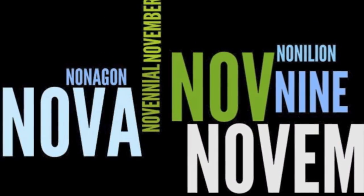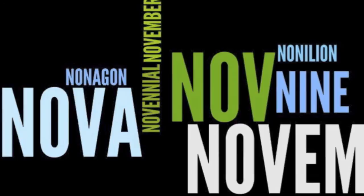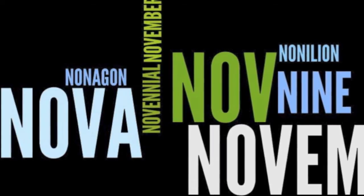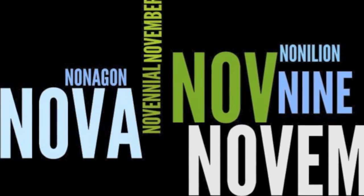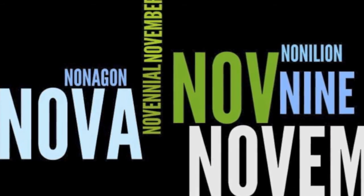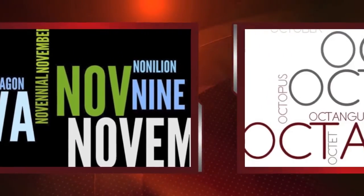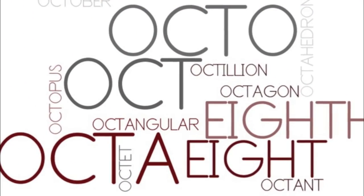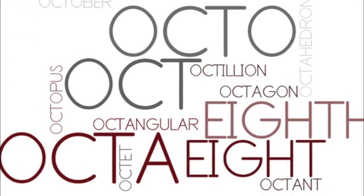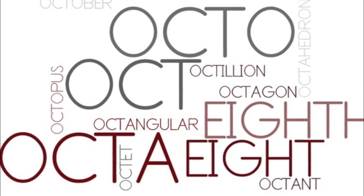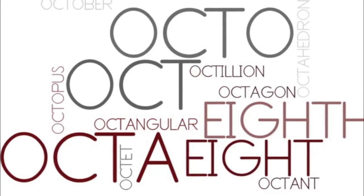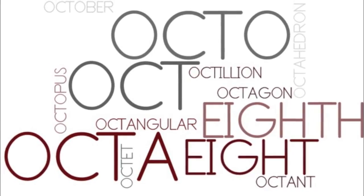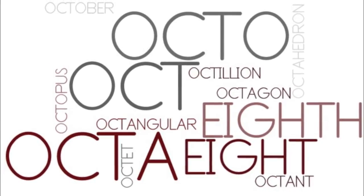Nov, nova, and novem mean nine, such as in nonillion, nonagon, novenial, or November. And octo means eight or an eighth part, such as octangular, octopus, octillion, octagon, or octet.